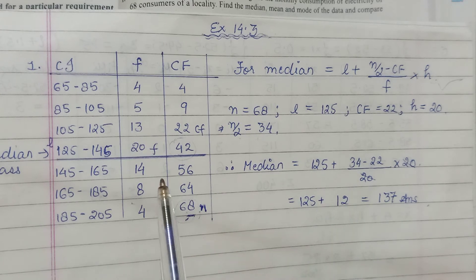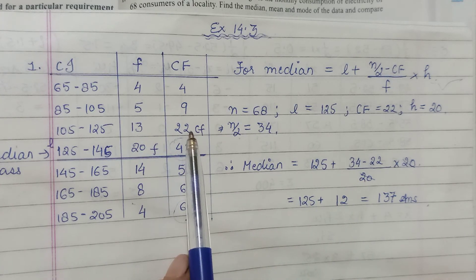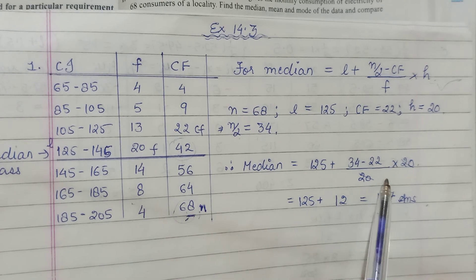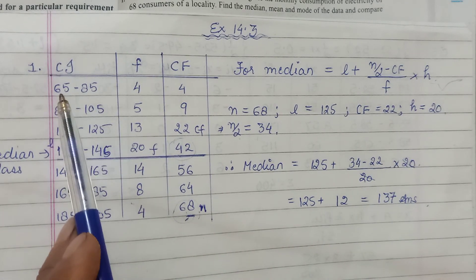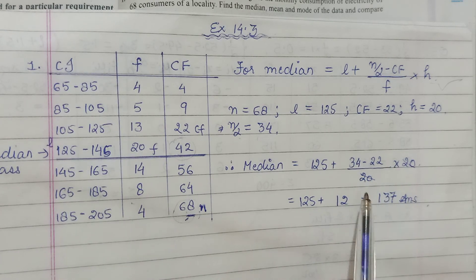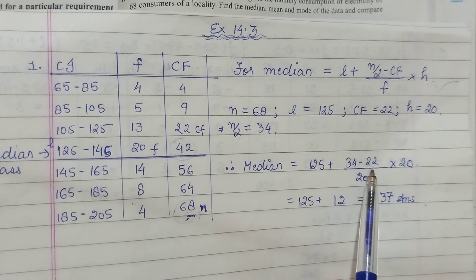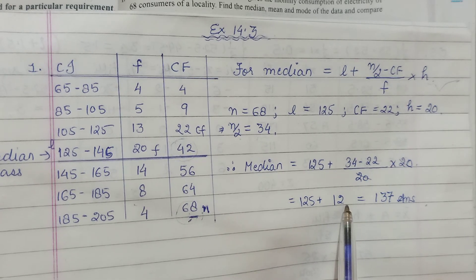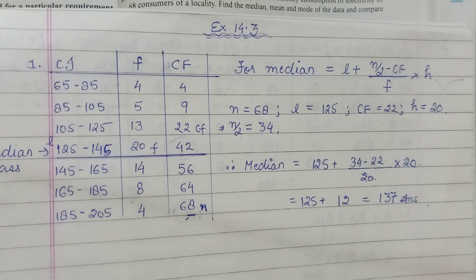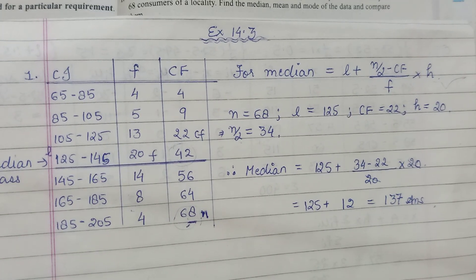Yeh mara median class ka l ho gaya 125, plus n by 2 that is 34, minus 22 - CF of the previous class - upon frequency of that class, that is 20, into length of interval. 85 minus 65 is 25, 105 minus 85 is 20. 20 gets cancelled, 34 minus 22 which is 12, so 12 upon 20 into 20, 125 plus 12, which is 137. That is your median for this particular class.